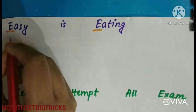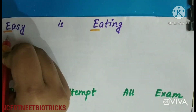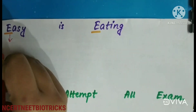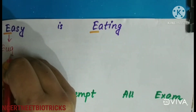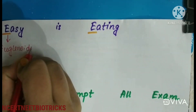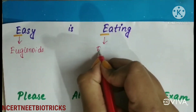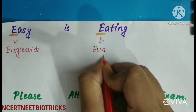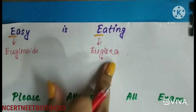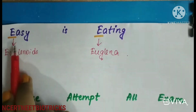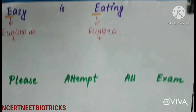Next, 'easy is 80' — E for Euglenoids. The example is Euglena. So the mnemonic is 'easy is 80' for Euglenoids and Euglena.